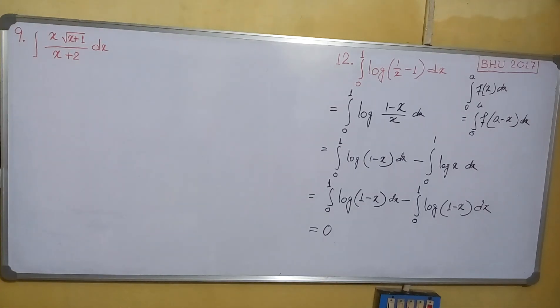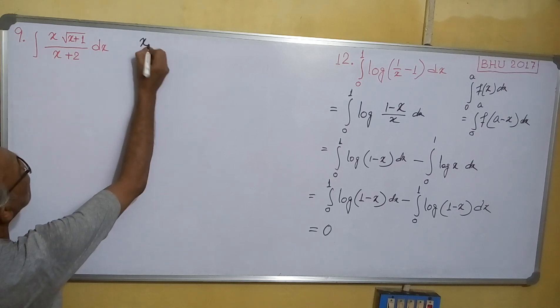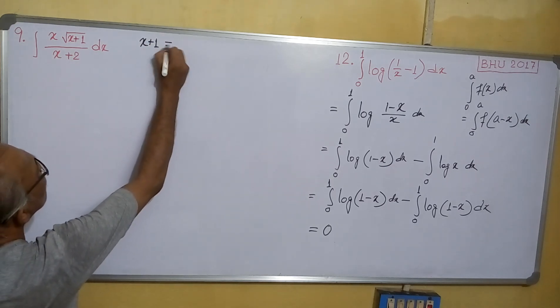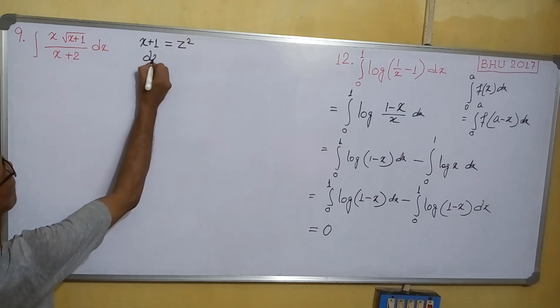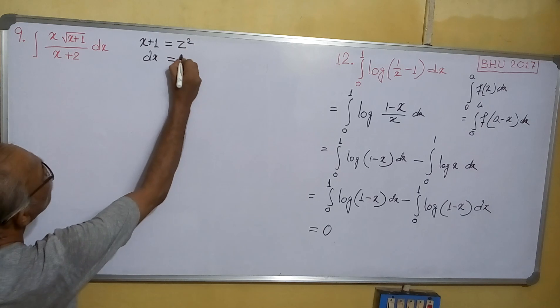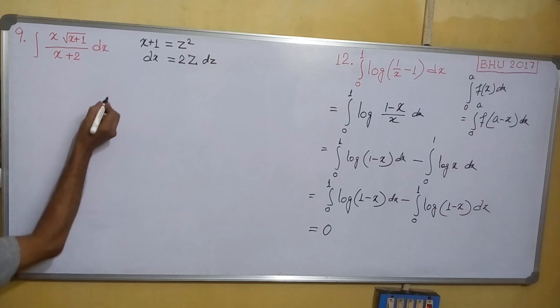Now see this one. In this problem we can assume x+1 equals z squared. Or we can say dx equals 2z dz.